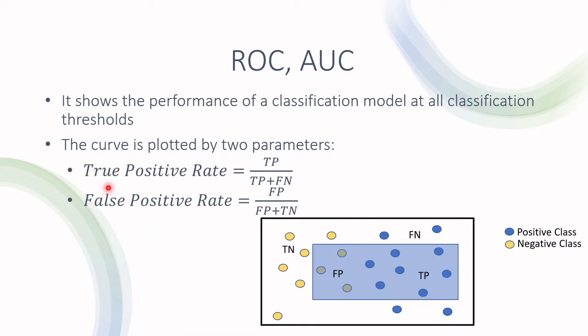The first parameter is the true positive rate, also known as recall. The true positive rate is true positives divided by true positives and the false negatives. And what this means in other words is how many out of the positive class were correctly identified.